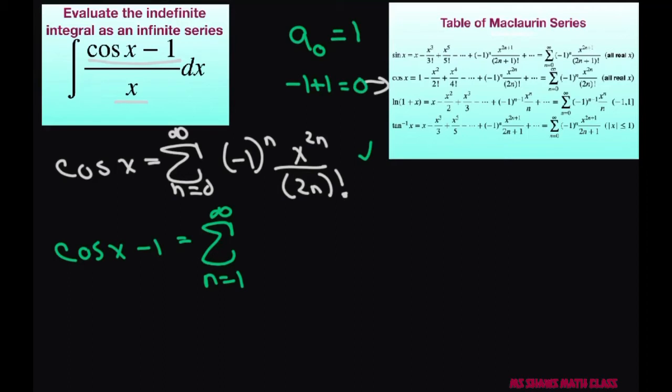So if I start at 1 I'm still going to get my cosine of x which is going to be negative 1 to the power of n times x to the power of 2n divided by 2n factorial. The only thing I had to do was change this because this equals 1 and then we'd be negative 1 plus 1 is 0.